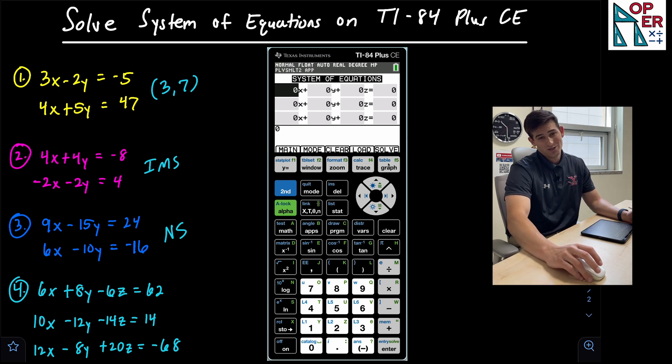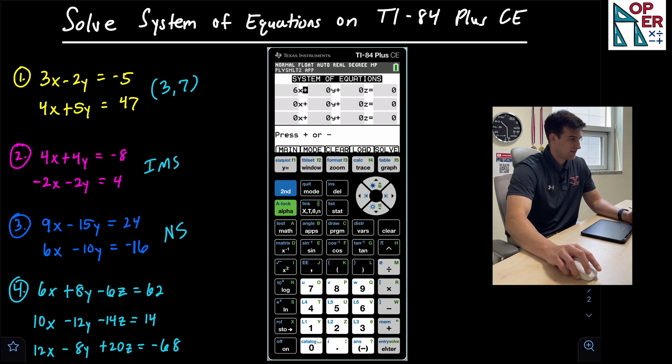And now notice we have three equations, three variables, a lot more information to type in. So let's do this one. And this will be the last one of the video. So we have 6X plus 8Y minus 6Z is equal to 62.